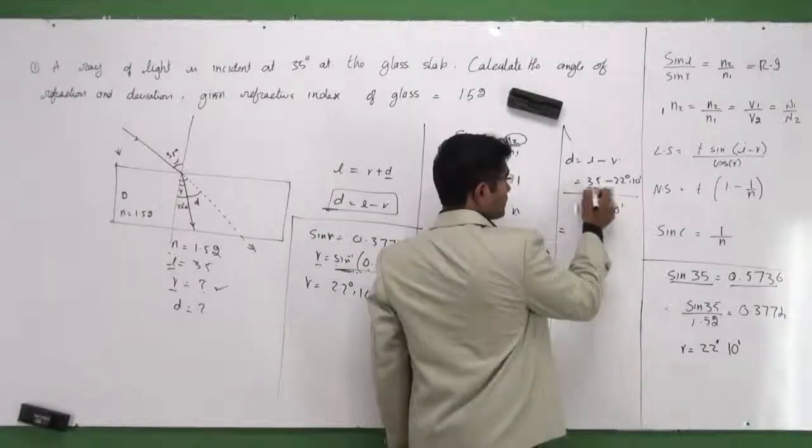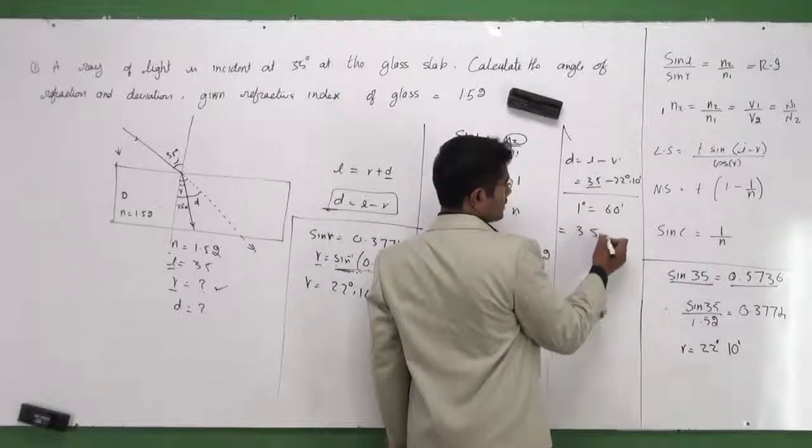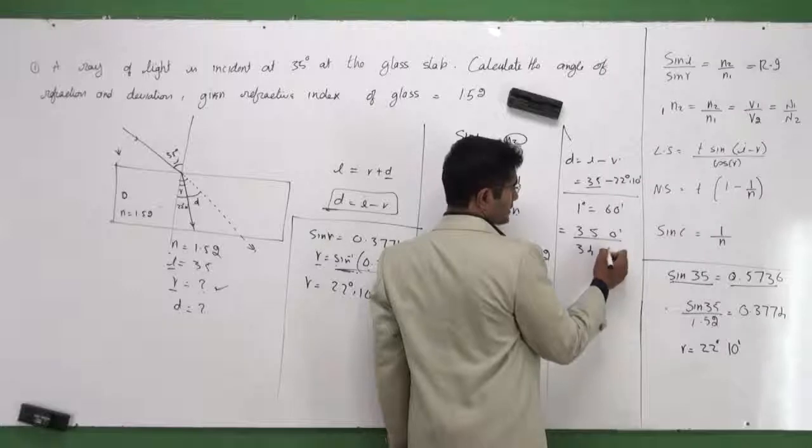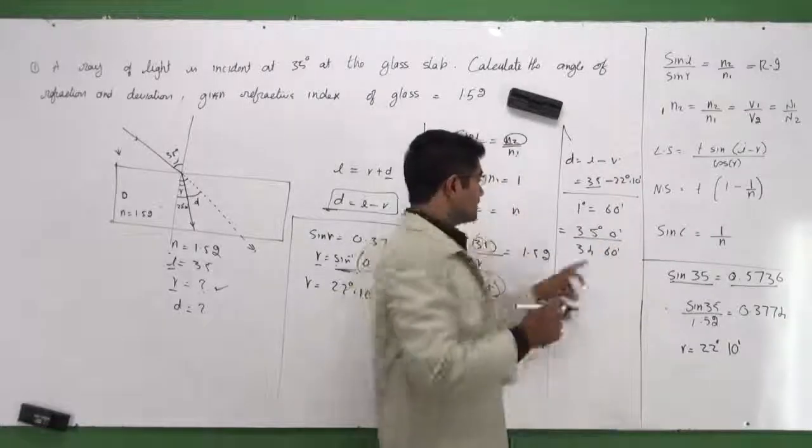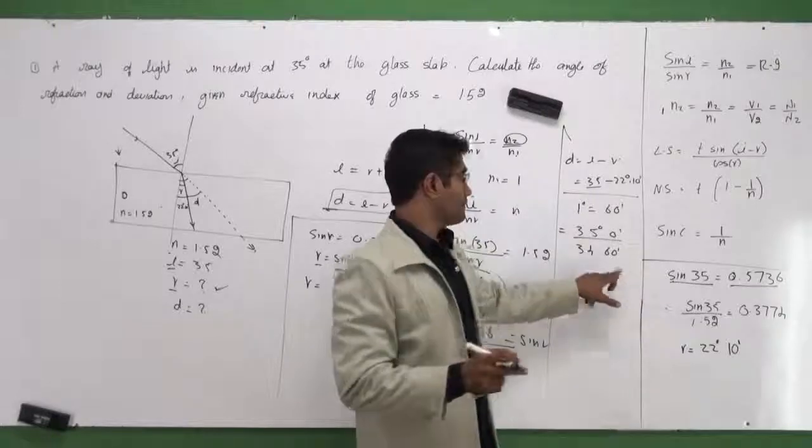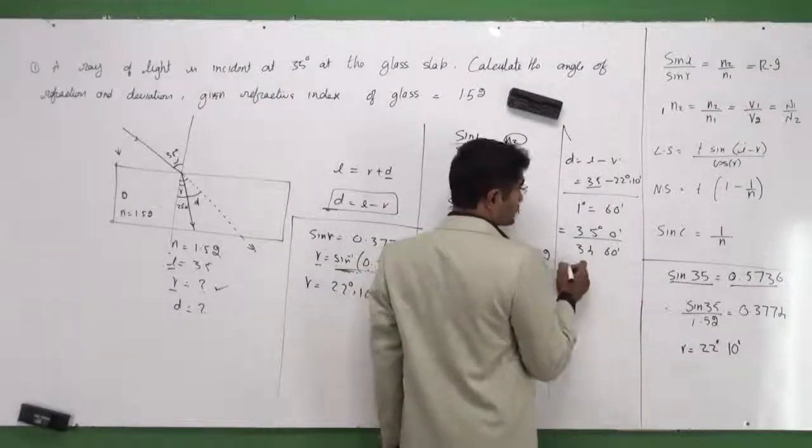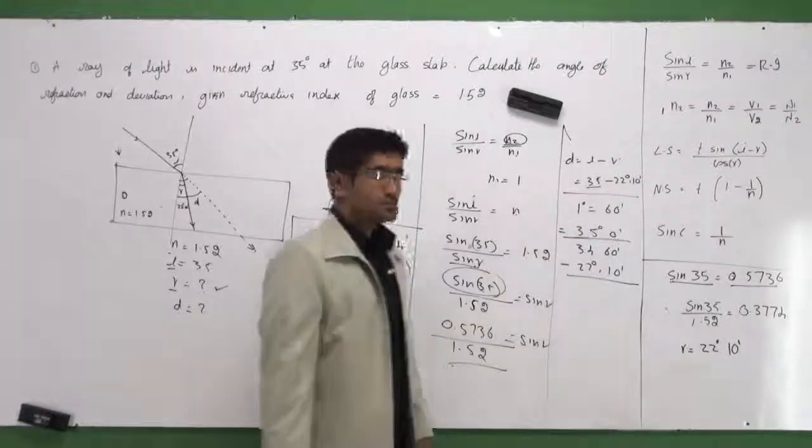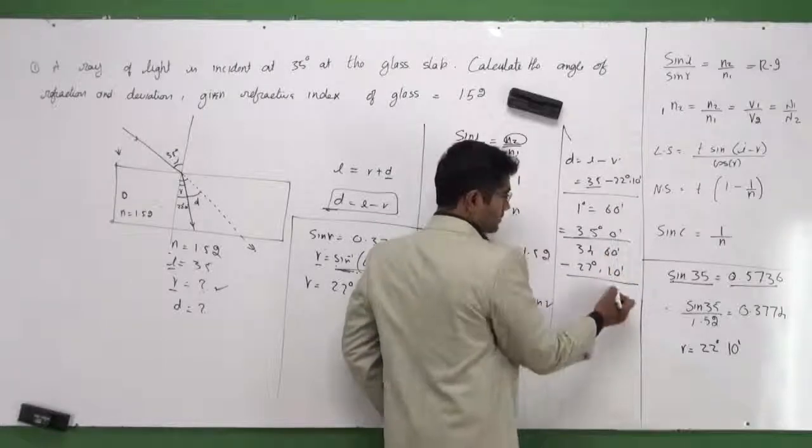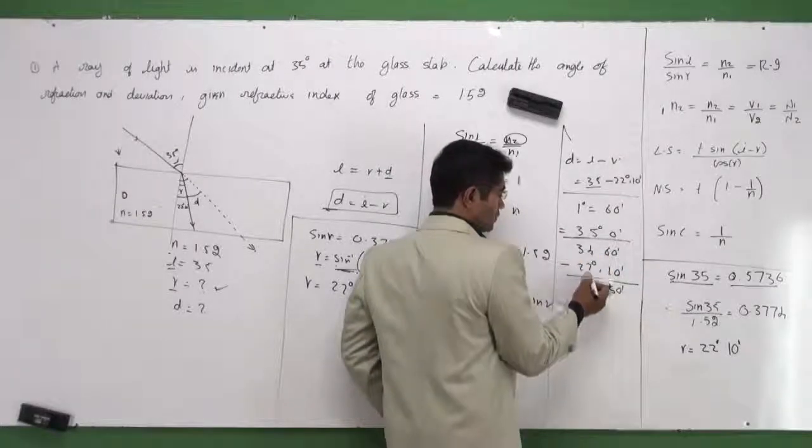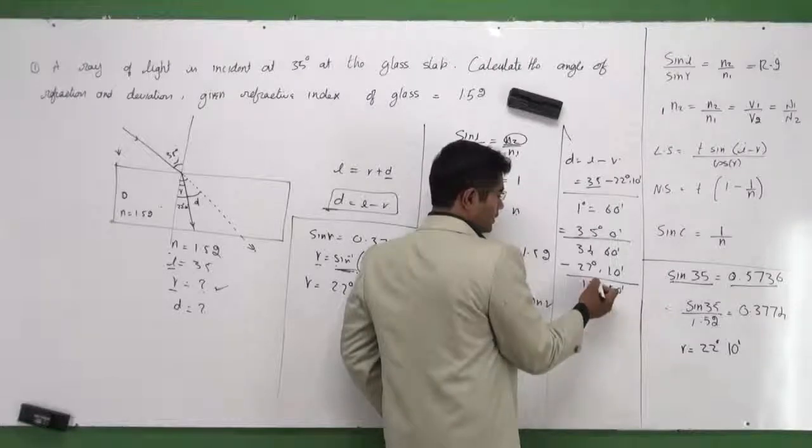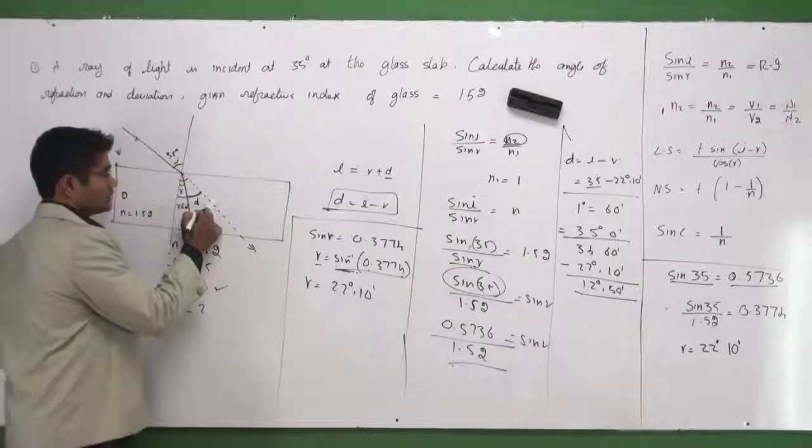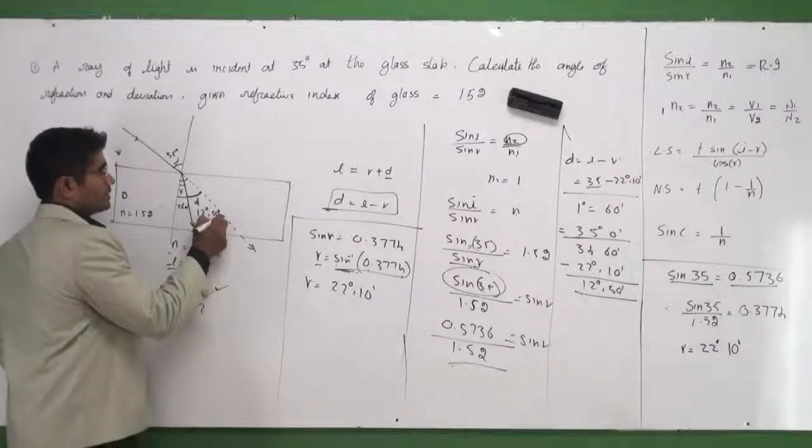What I can do here is: 35 degrees can be written as 35 degrees and 0 minutes. I can write 35 degrees as 34 degrees and 60 minutes. I'm taking one degree from here and making it 60 minutes. From this I'm supposed to subtract 22 degrees and 10 minutes. If I do this, from 60 minutes I subtract 10 minutes, I get 50 minutes. And from 34 to 22 is 12. 12 degrees and 50 minutes is the deviation produced. This angle would be 12 degrees and 50 minutes. That's it.